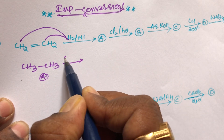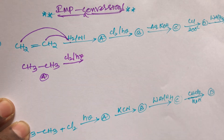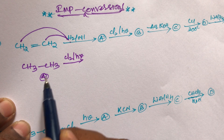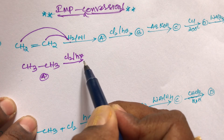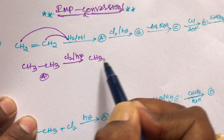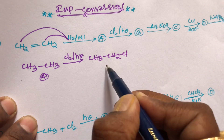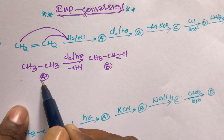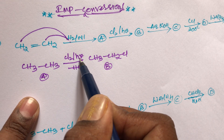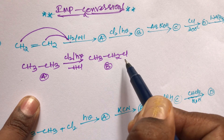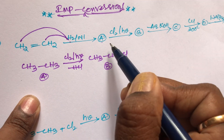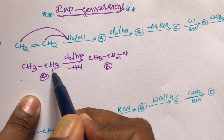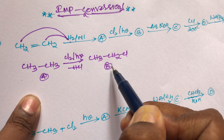When compound A reacts with chlorine in the presence of sunlight, this belongs to free radical substitution. One hydrogen is replaced by one chlorine. We get CH₃CH₂Cl — this is compound B, which is ethyl chloride. The remaining HCl is eliminated. So the conversion of A to B is a free radical substitution reaction — specifically halogenation of an alkane.